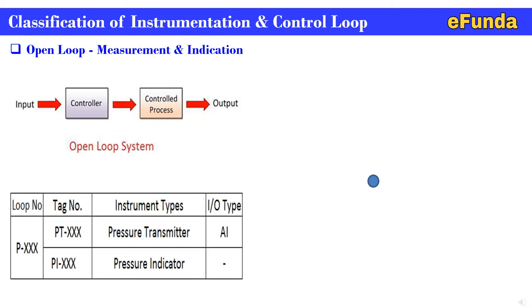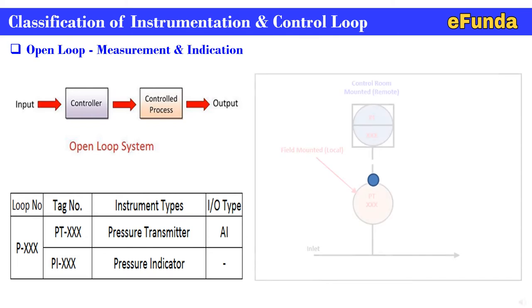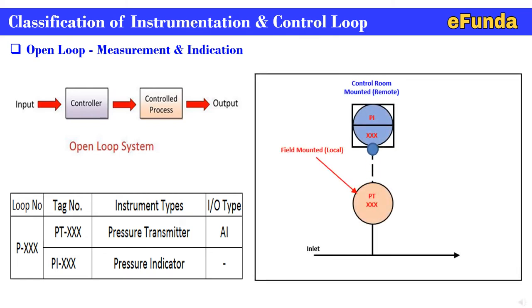In the table below, we have indicated the open loop pressure transmitter where the pressure transmitter is installed in the field, giving an analog input to the system control room, and the system gives you the pressure indication in the control room. One can see the P&ID representation showing how the signal passes from field to the control room — field mounted locally and remote mounted in the control room. This basic understanding will be useful for future topics.